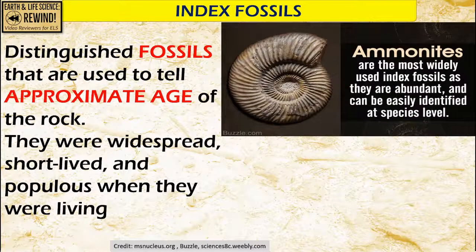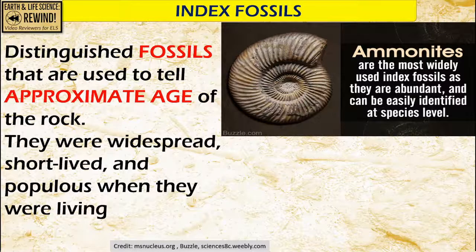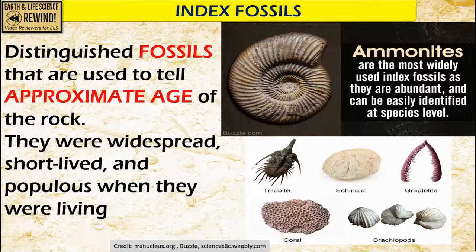Examples of index fossils are ammonites. Ammonites are used to identify fossils of the Mesozoic era, meaning the age of dinosaurs. So if you see ammonite fossils, it means they are of the same era as dinosaurs. Corals live during the Paleozoic era, so they are very far behind. Graptolites and echinoids as well — they have their own time signatures. So when you see fossils like that, it tells you the era where they lived.